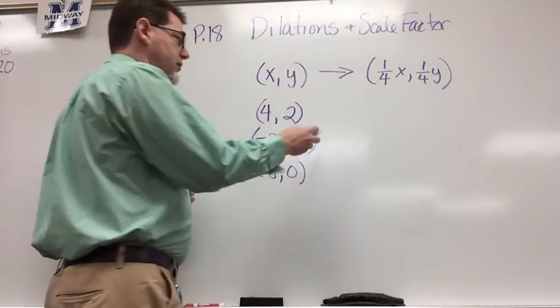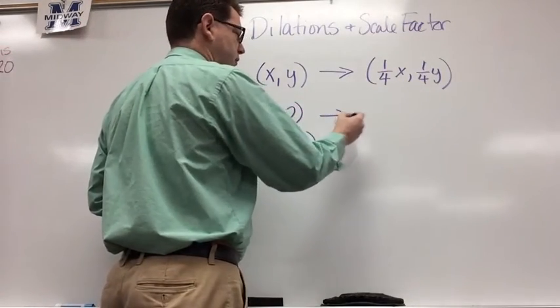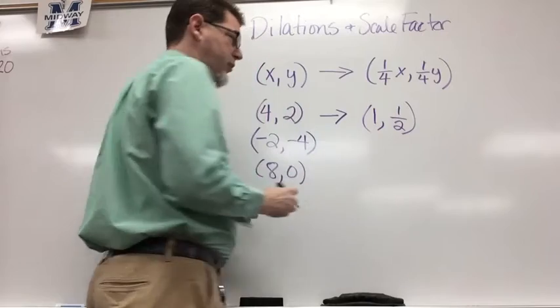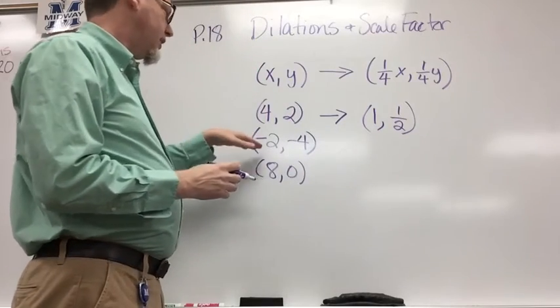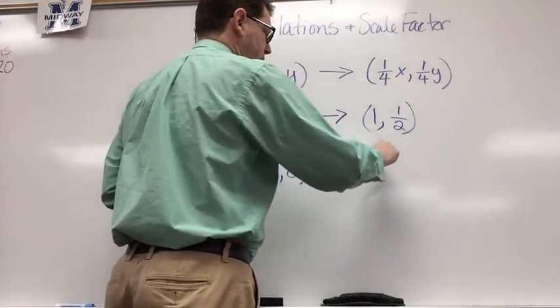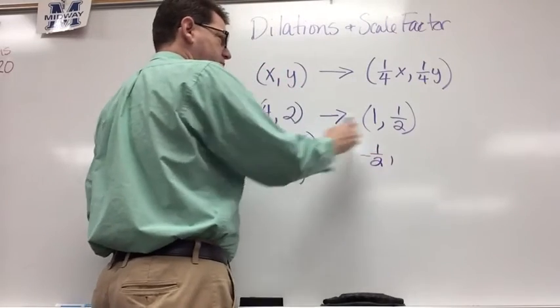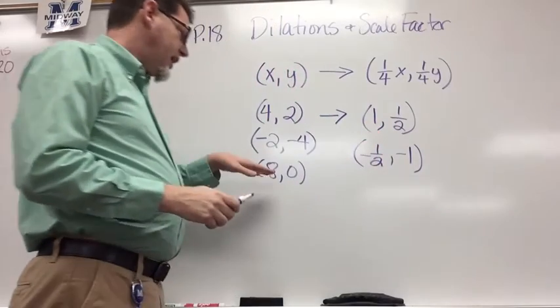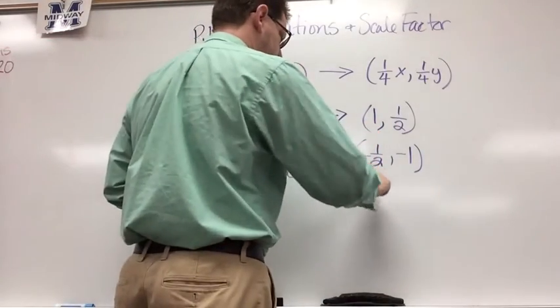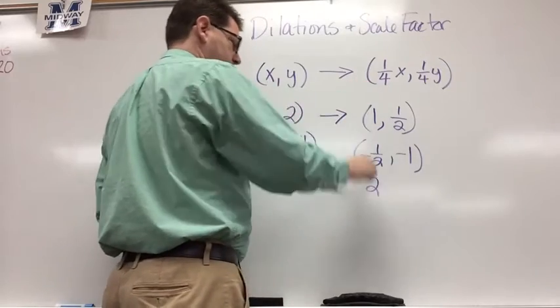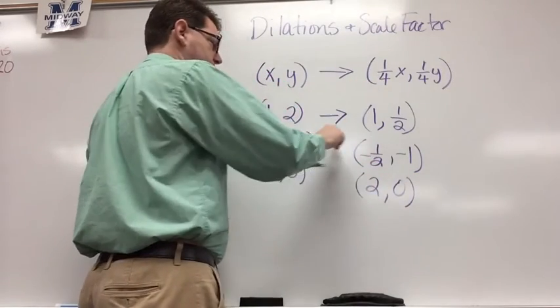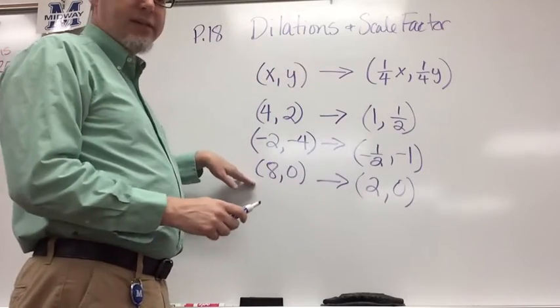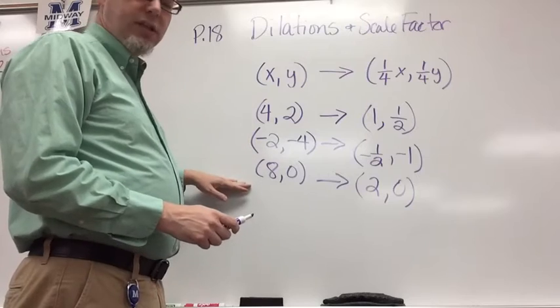So let's start with (4, 2). 4 times 1/4 is 1, and 2 times 1/4 is 1/2, so there's my first new point. The second one: -2 times 1/4 is -1/2, and -4 times 1/4 is -1. So those are my new points after I've applied my scale factor to each of the old points.